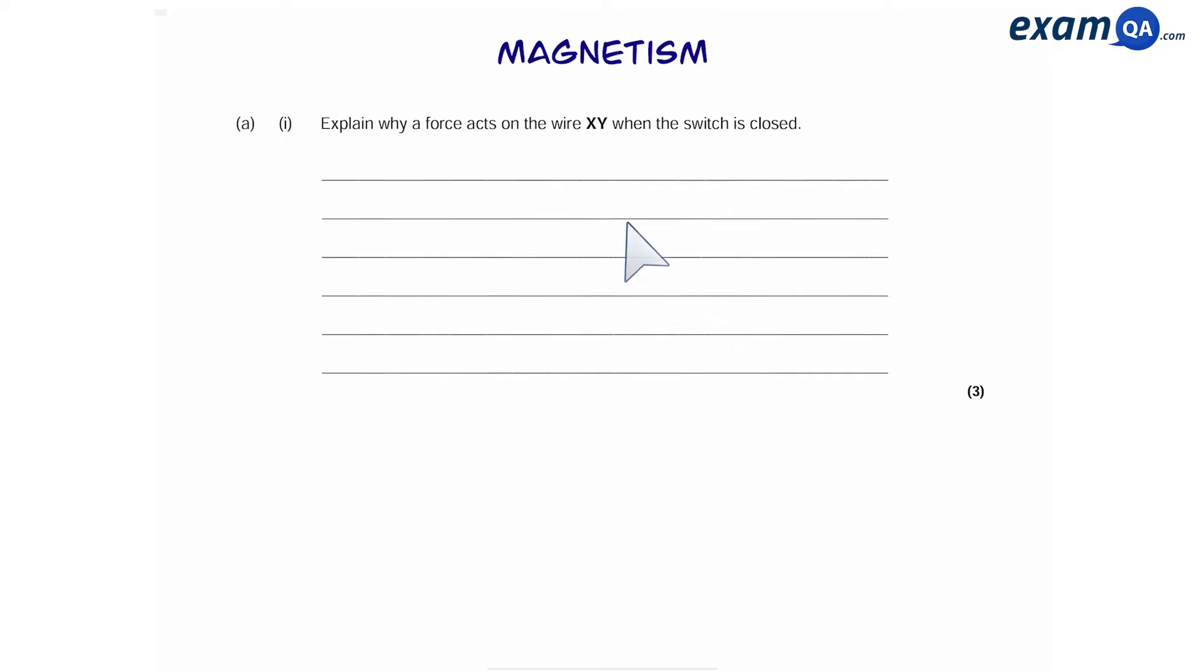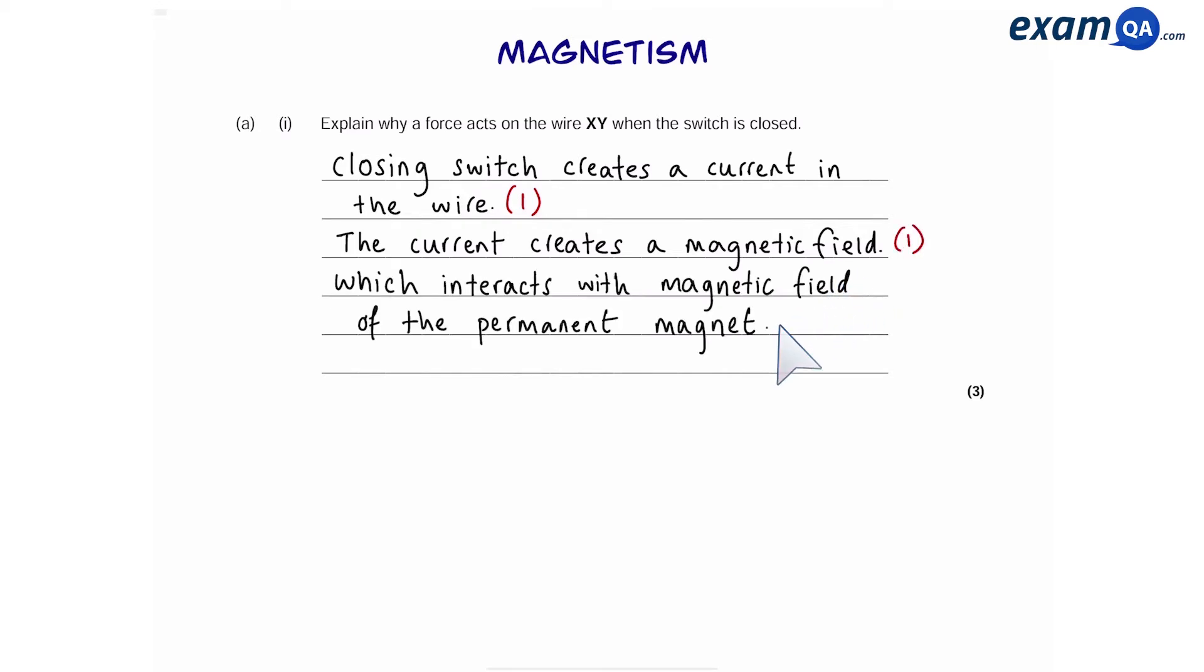So explain why a force acts on the wire XY when the switch is closed. Number one: closing the switch creates a current in the wire. That's one mark. The current creates a magnetic field. Second mark. Which interacts with the magnetic field of the permanent magnet. Third mark. Easy three marks.